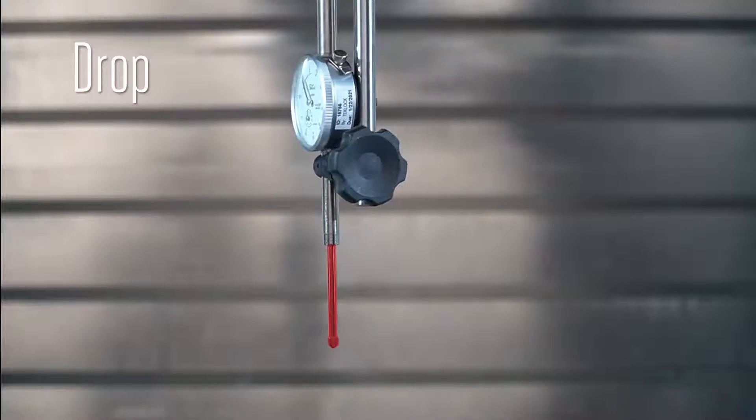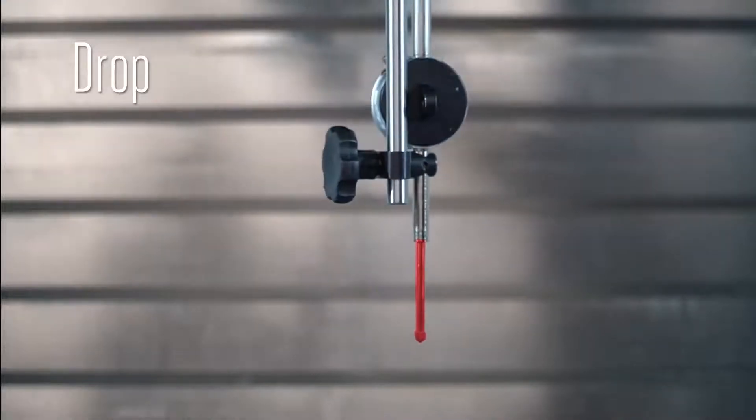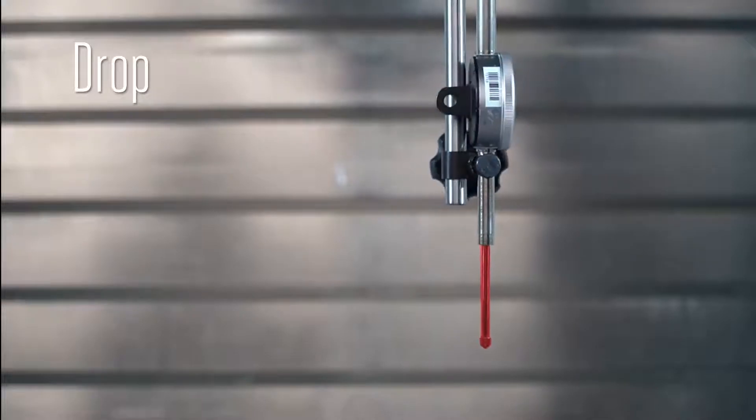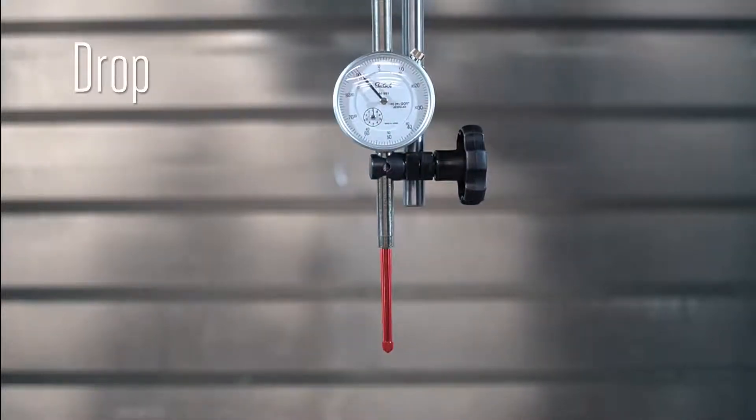The spindle of the drop indicator, also called a travel or plunge indicator, is usually set to drop straight down on the part being measured. They're great for measuring movement in the range of an inch or more.